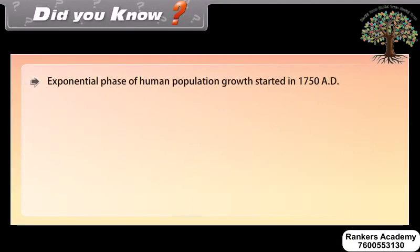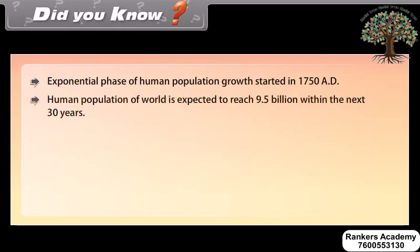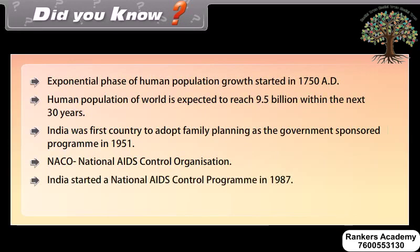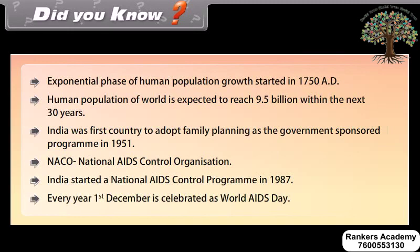The exponential phase of human population growth started in 1750 AD. The human population of the world is expected to reach 9.5 billion within the next 30 years. India was the first country to adopt family planning as a government-sponsored program in 1951. NACO, the National AIDS Control Organization, started a national AIDS control program in 1987. Every year, December 1st is celebrated as World AIDS Day.